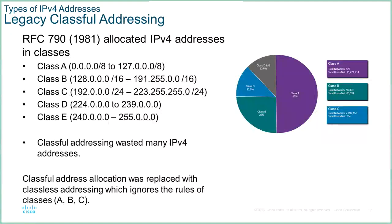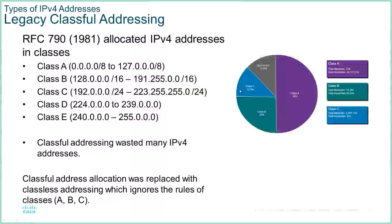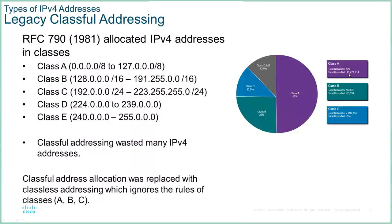This is classful IPv4 addressing — where IPv4 started and where all our base rules came from. When IPv4 was created it was divided into five classes of addresses. Class A gave the largest number of hosts per network — only 128 networks but each network could have 16 million individual hosts.